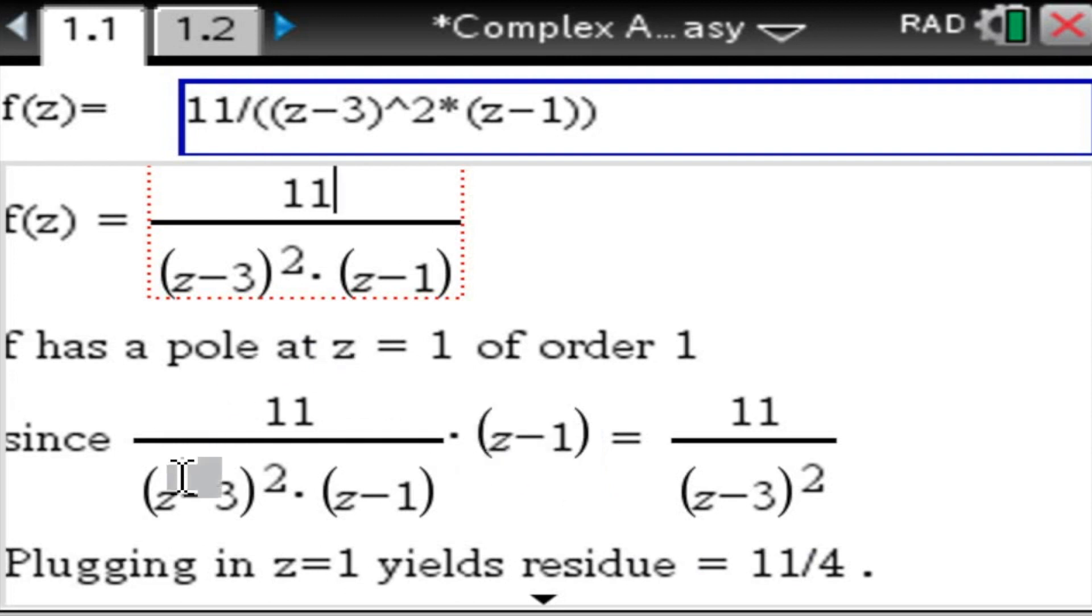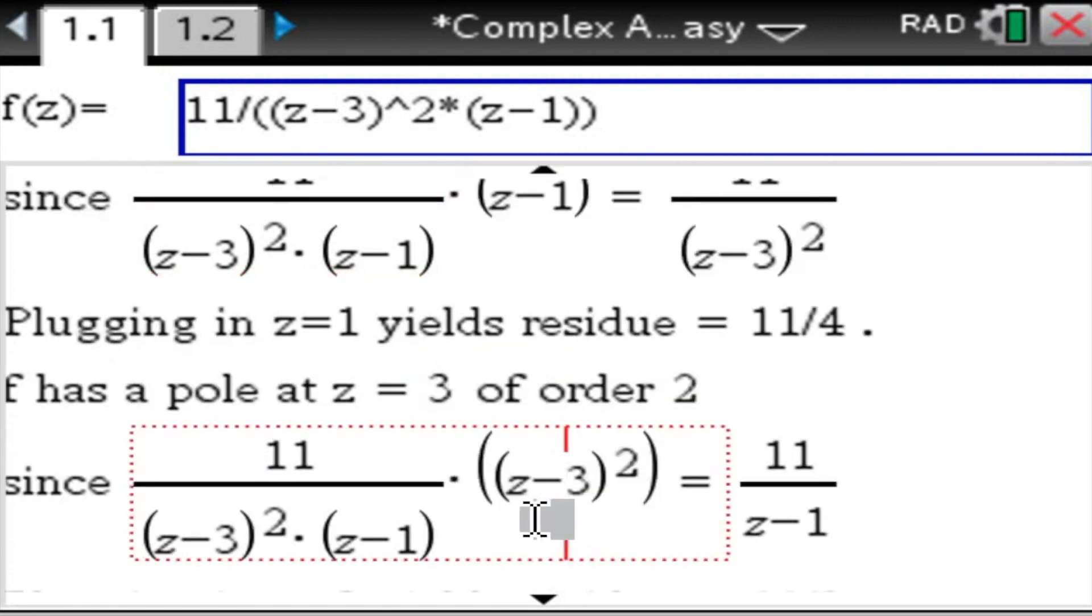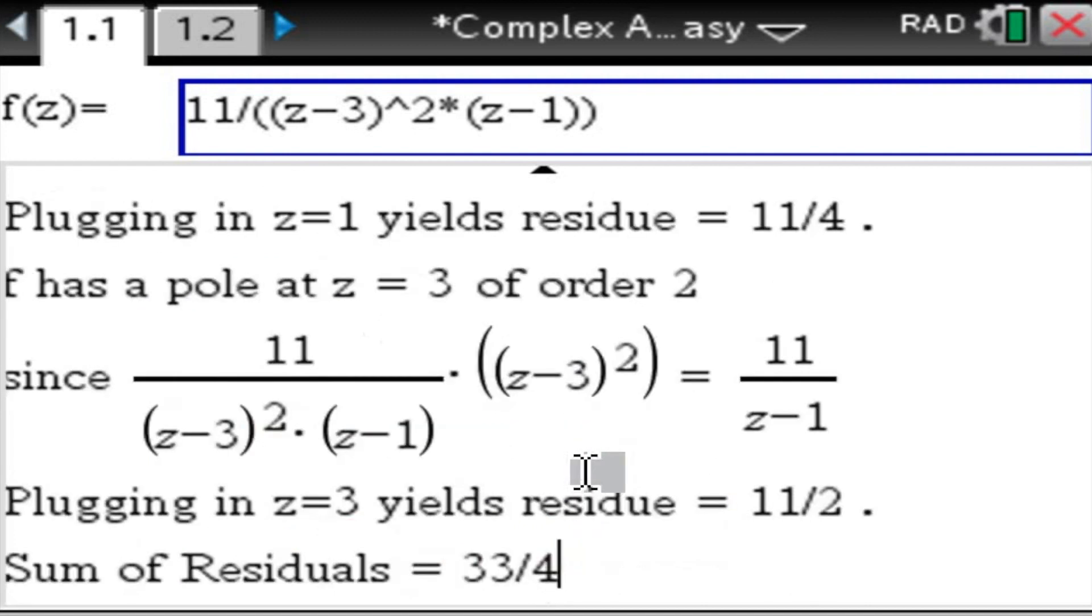Because if we multiply the original function by z minus 1, the z minus 1's cancel. And we plug in 1 for the remaining z, we end up with 11 over 4. And then we have a pole of order 3 at z equals 3. And that residue turns out to be 11 over 2. And the sum of the residues is 33 over 4. Now that is a very handy part of the app because finding poles and residues shows up all the time.